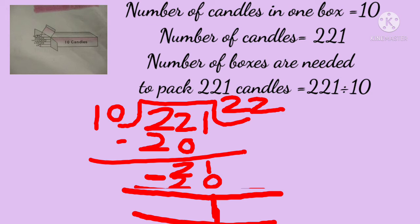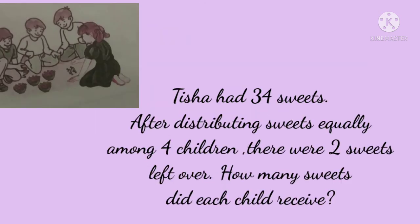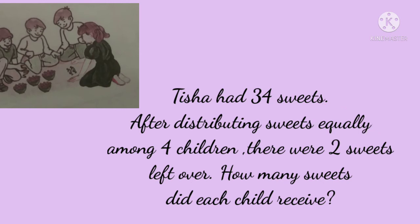Now let us read the third word problem. Tisha had 34 sweets. After distributing sweets equally among 4 children — stress on the keyword 'equally' — there were 2 sweets left over. We have to calculate how many sweets did each child receive. There are 4 children, and Tisha distributed 34 sweets equally among them.